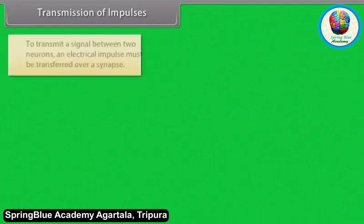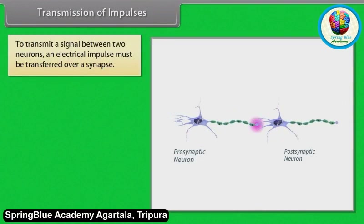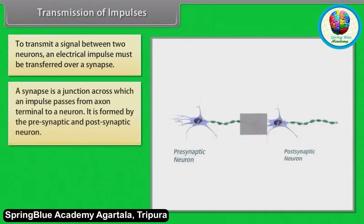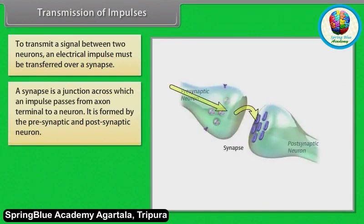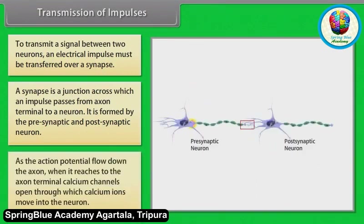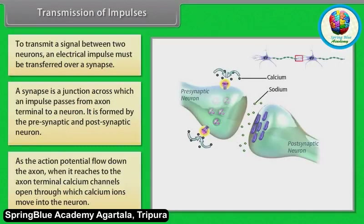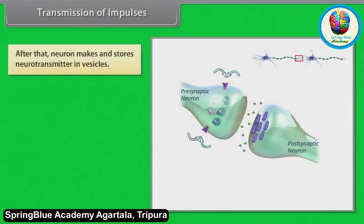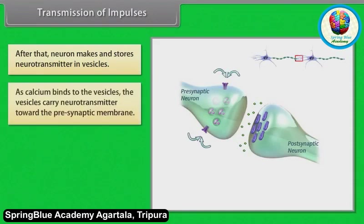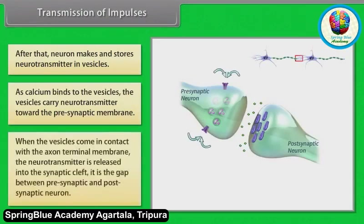To transmit a signal between two neurons, an electrical impulse must be transferred over a synapse. A synapse is a junction across which an impulse passes from the axon terminal to a neuron. It is formed by the pre-synaptic and post-synaptic neuron. As the action potential flows down the axon and reaches the axon terminal, calcium channels open, allowing calcium ions to move into the neuron. The neuron stores neurotransmitters in vesicles; as calcium binds to the vesicles, they carry neurotransmitters towards the pre-synaptic membrane and release them into the synaptic cleft.